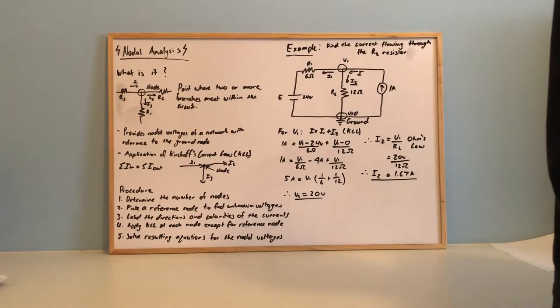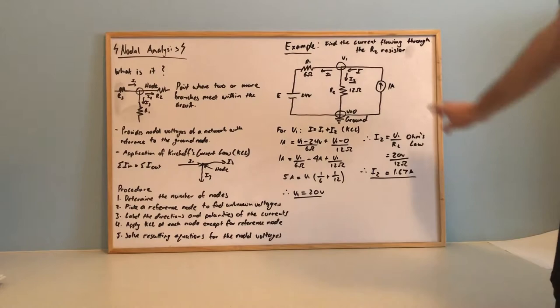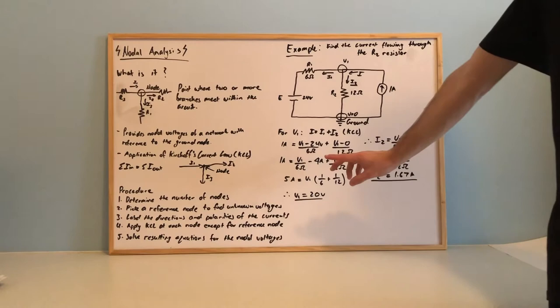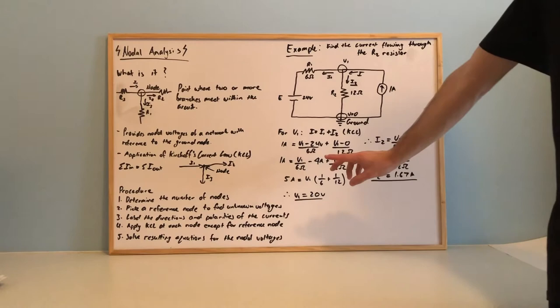So by simple algebraic equation we can split this equation here to form V1 over 6 ohms minus 4 amps while leaving I2 the same. We then do a bit more rearranging and we end up with our unknown nodal voltage to be 20 volts. So we have 20 volts over the 12 ohm resistor which then gives us the 1.67 amps flowing through that branch.